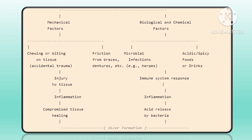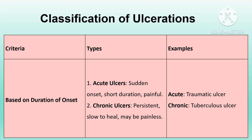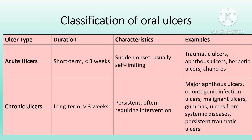Oral ulcers may be classified on the basis of etiology, duration, clinical presentation, and size. Based on duration, we have acute ulcers — sudden onset, short duration, and painful — and chronic ulcers, which are persistent, slow to heal, and may be painless. An example of an acute ulcer is a traumatic ulcer; an example of a chronic ulcer is the tuberculous ulcer.